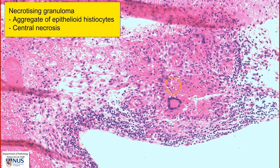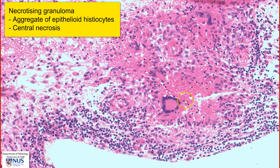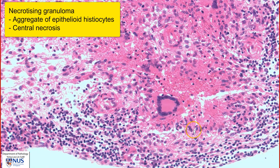Over here, we can see a necrotizing granuloma. We have epithelioid histiocytes or macrophages, which form the granuloma. And then within the central area, there is this amorphous eosinophilic material, which is necrosis — hence, necrotizing granuloma.